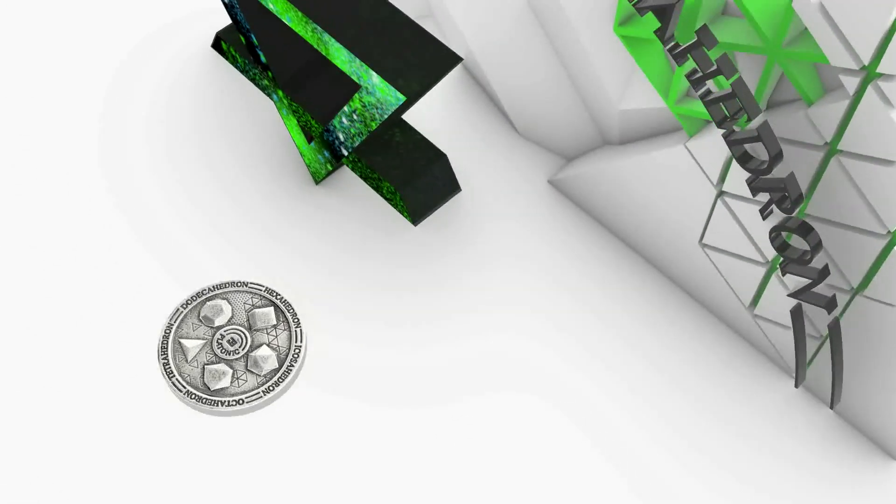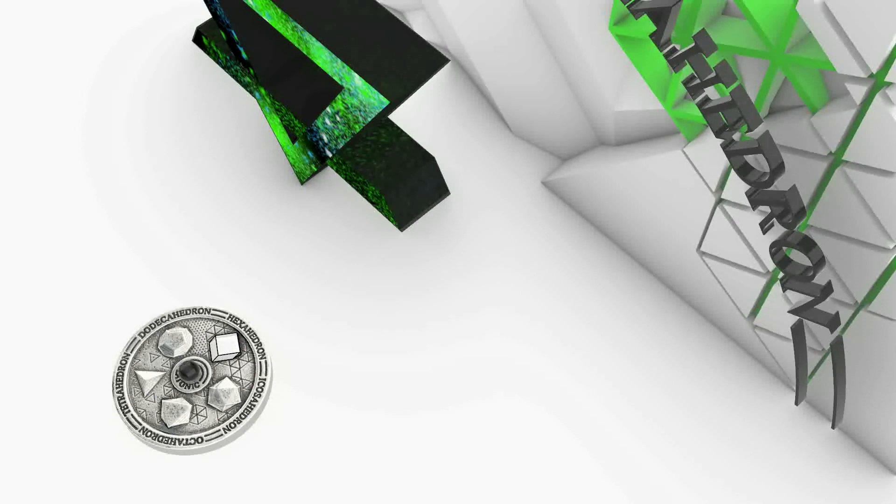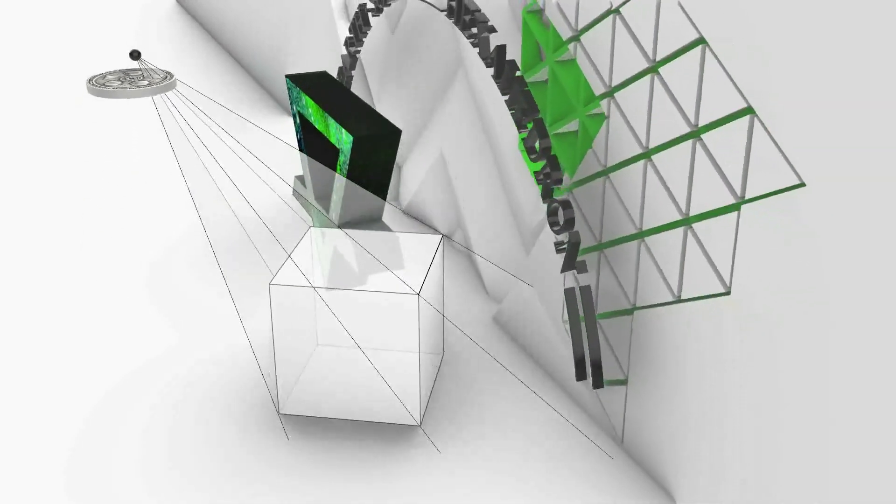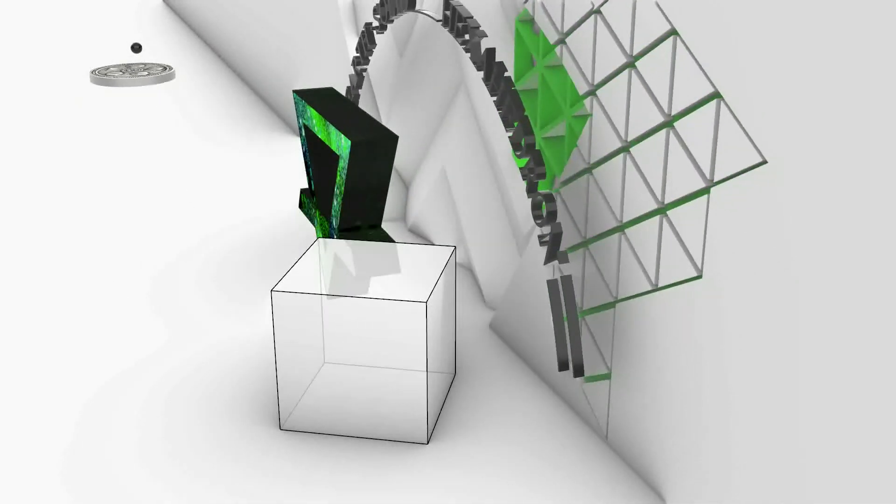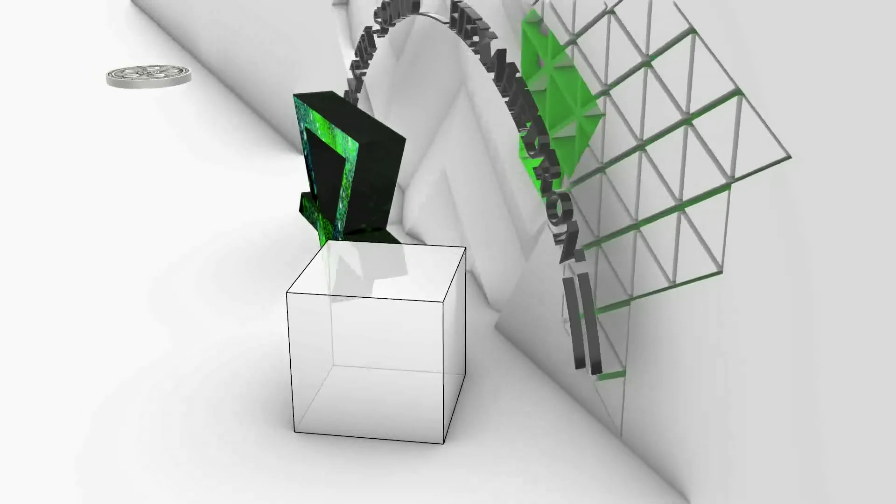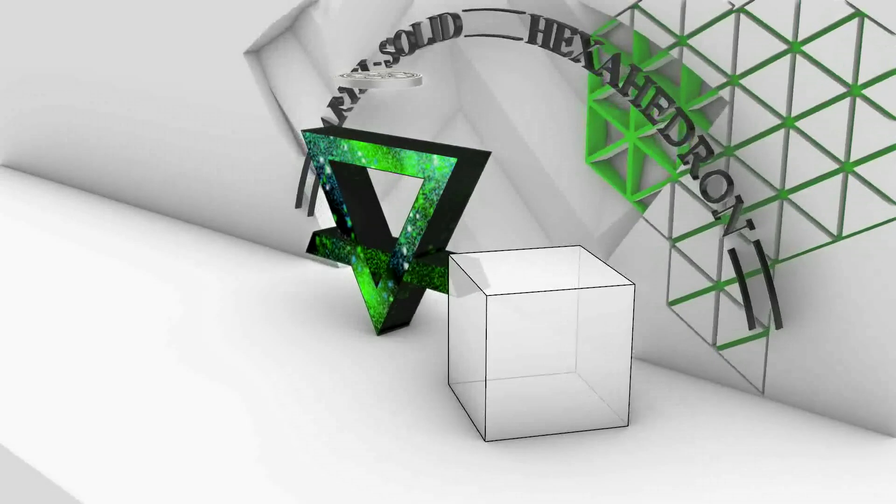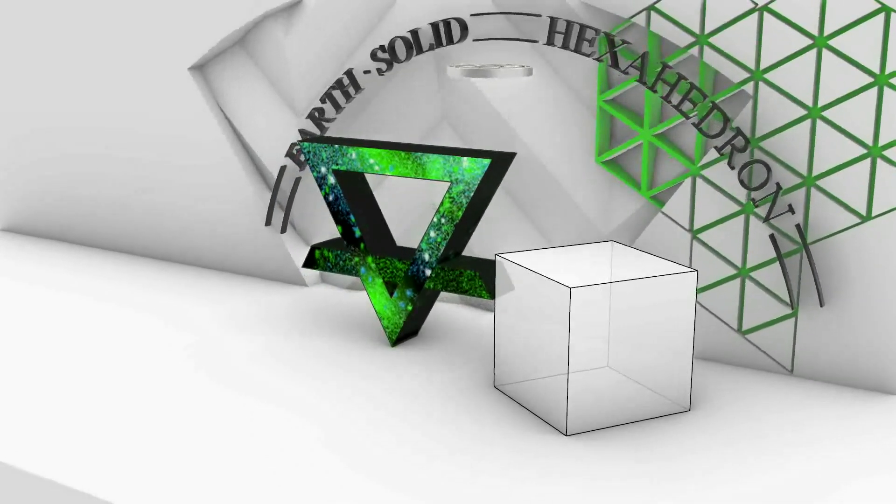The hexahedron is by far the most recognizable of the Platonic solids due to its practical spatial qualities and presence in our everyday lives. It stands out amongst the other solids because of its six square faces composed in such a way that multiple cubes can perfectly fill space when stacked.